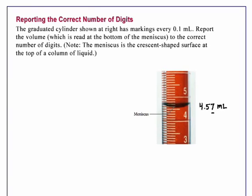Therefore, this measured volume has three significant digits—two of which we are sure, and one that has uncertainty.